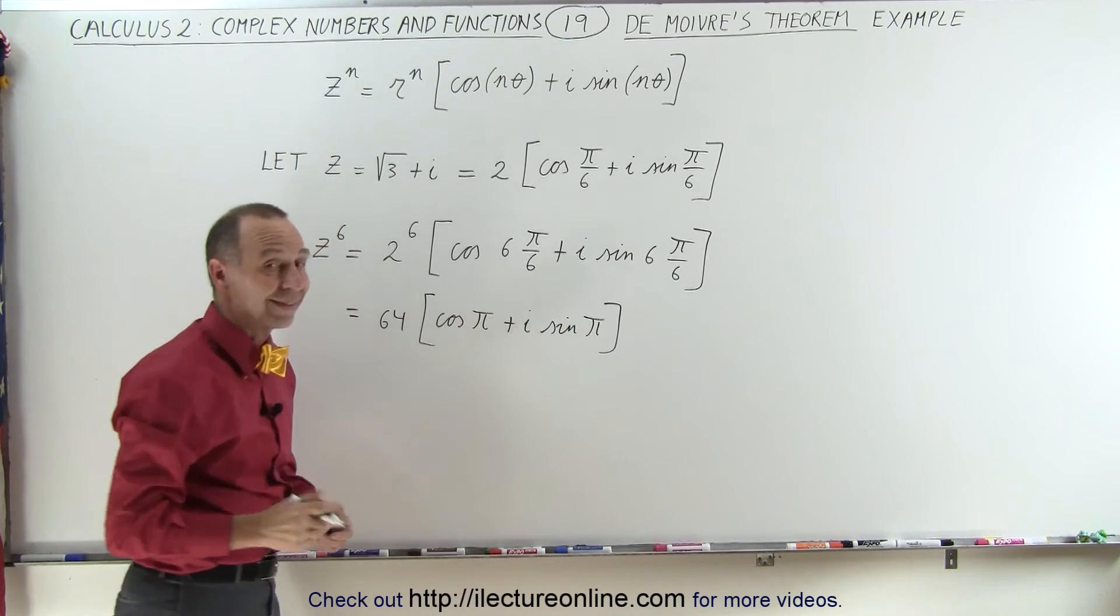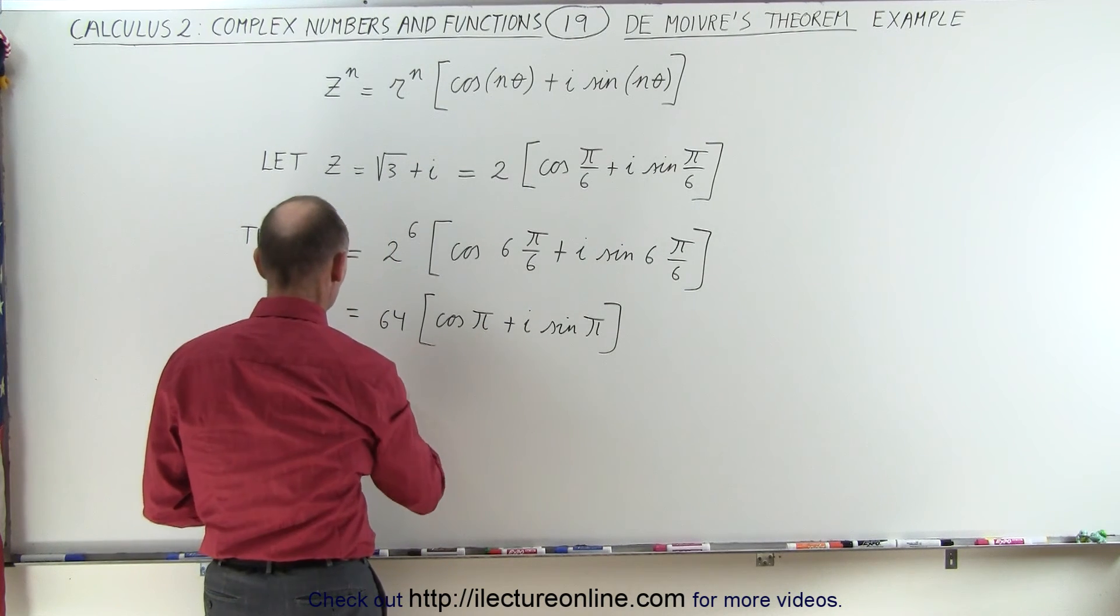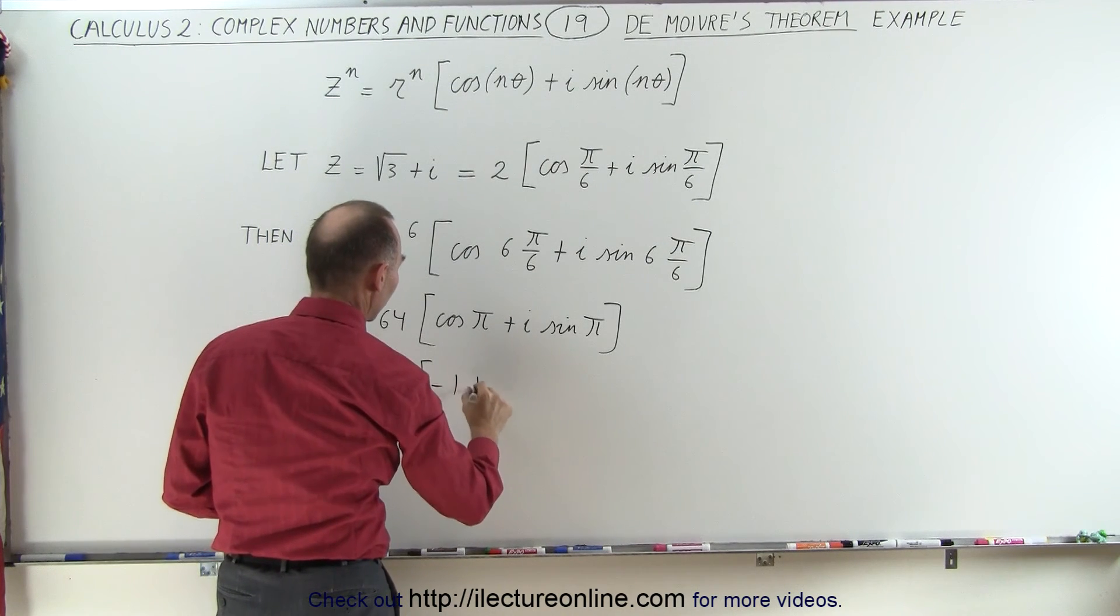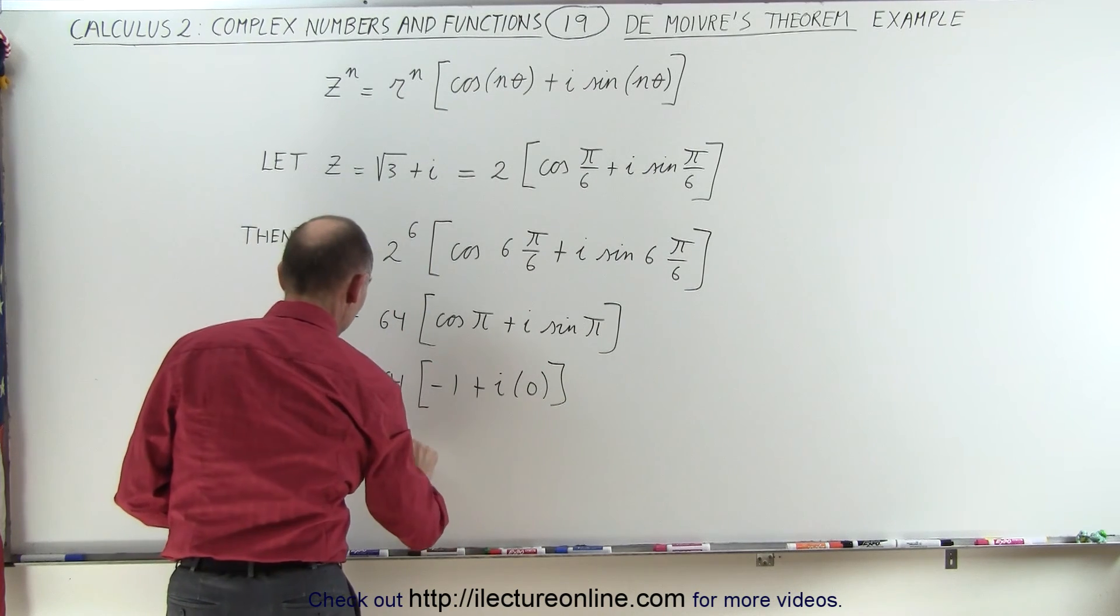Of course, we realize that the sine of pi is equal to 0, and the cosine of pi is equal to negative 1, so this can be written as 64 times negative 1 plus i times 0, or this is equal to negative 64.